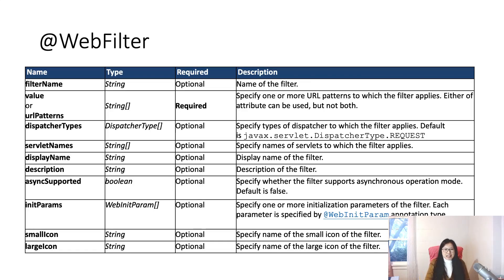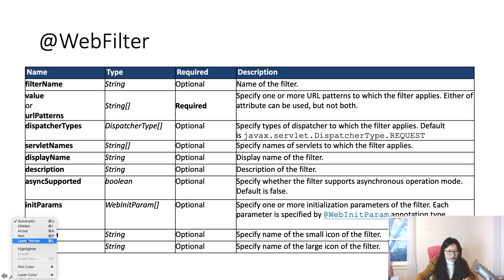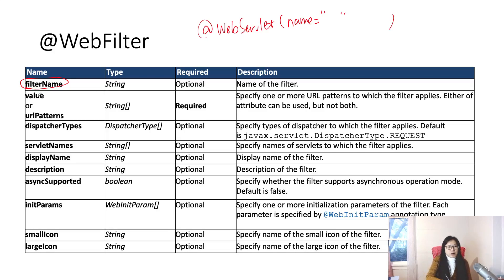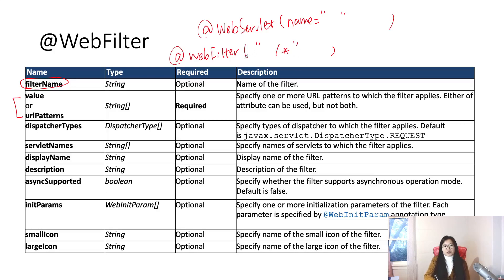This WebFilter annotation has attributes you can configure. One interesting thing: do you remember the servlet? For a servlet, if you want to specify the name, you just use the name attribute. But for a filter, you have to use filterName to specify that filter. The value and urlPattern are the same and are required.